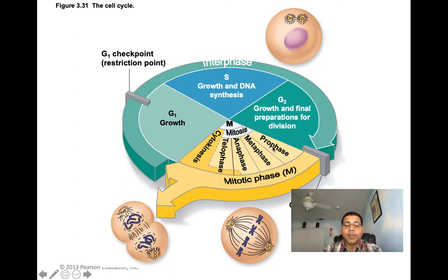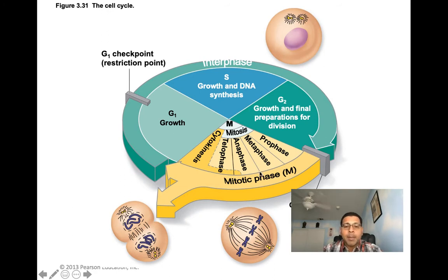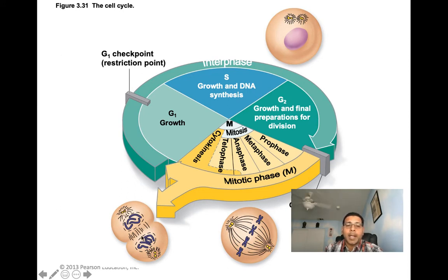In prophase, the nucleus starts to break apart and defragment. In metaphase, chromosomes line up at the metaphase plate. In anaphase, they move apart to opposite poles. In telophase, the nucleus starts to reform. Then we move to cytokinesis — the separation of the cytoplasm and formation of the two cells.